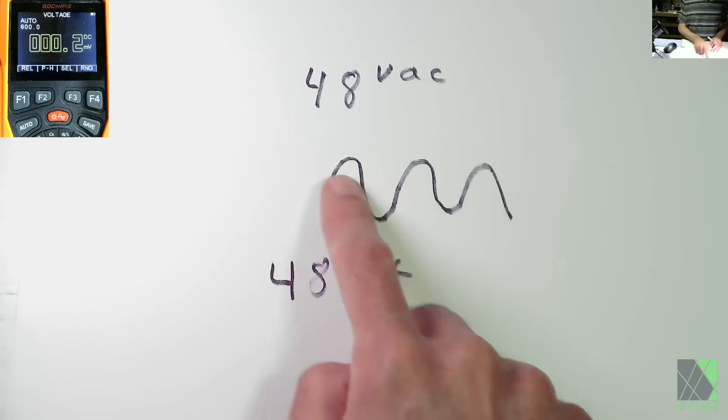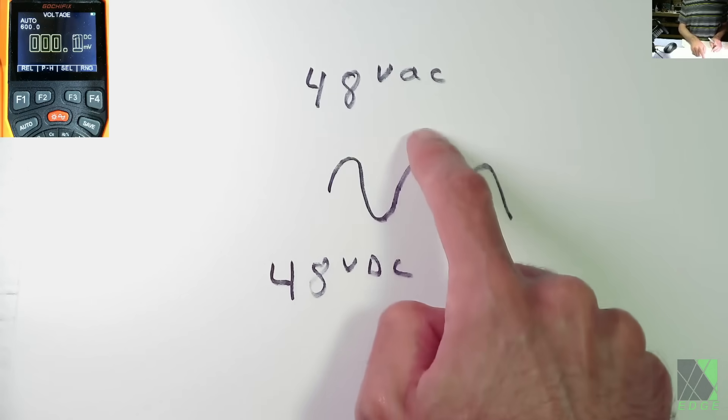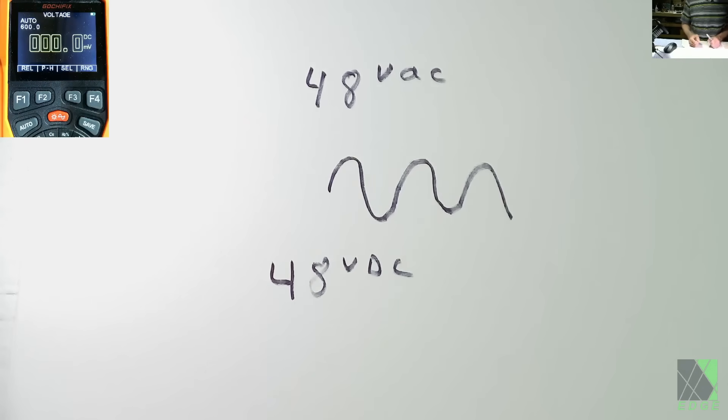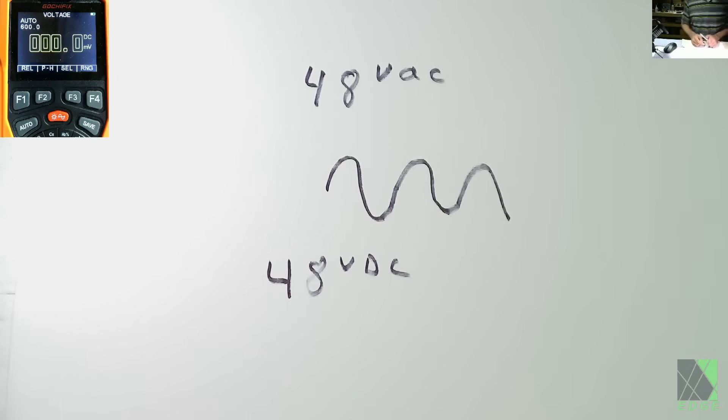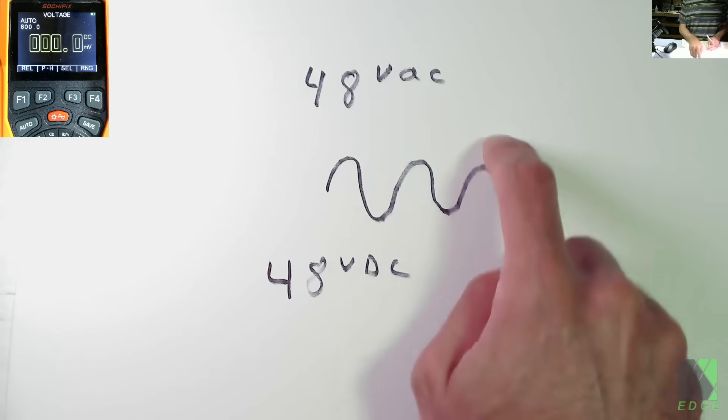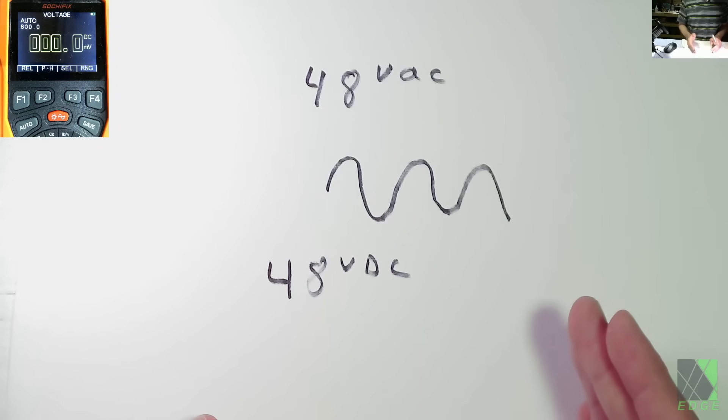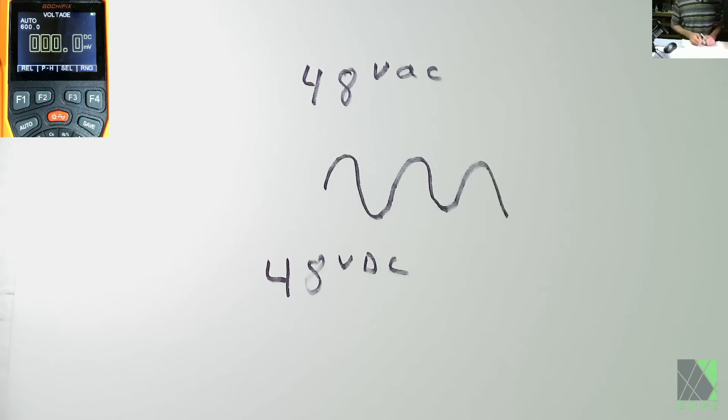This is roughly what a sine wave looks like. AC alternates between positive and negative and it does this usually 60 times a second. In some places it's 50 times per second, but the reality is that this voltage is going back and forth between positive and negative. There's technically no polarity. It's going back and forth, but really AC doesn't have a polarity. It doesn't matter which side you hook up to. You get the same result.